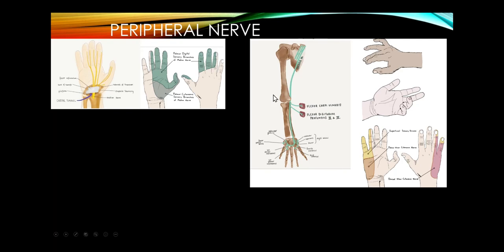Ulnar neuropathy is usually due to elbow resting, injuring the ulnar nerve at the elbow. There is much hand muscle weakness due to all the ulnar-supplied hand muscles. Numbness is in the fifth digit and ulnar half of the ring finger. More severe ulnar neuropathy may cause claw hand formation with the fourth and fifth fingers curled back.